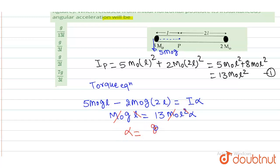So α is going to be g/13L. g/13L is our correct answer. Option E is correct. I hope we have got your answer. Thank you.